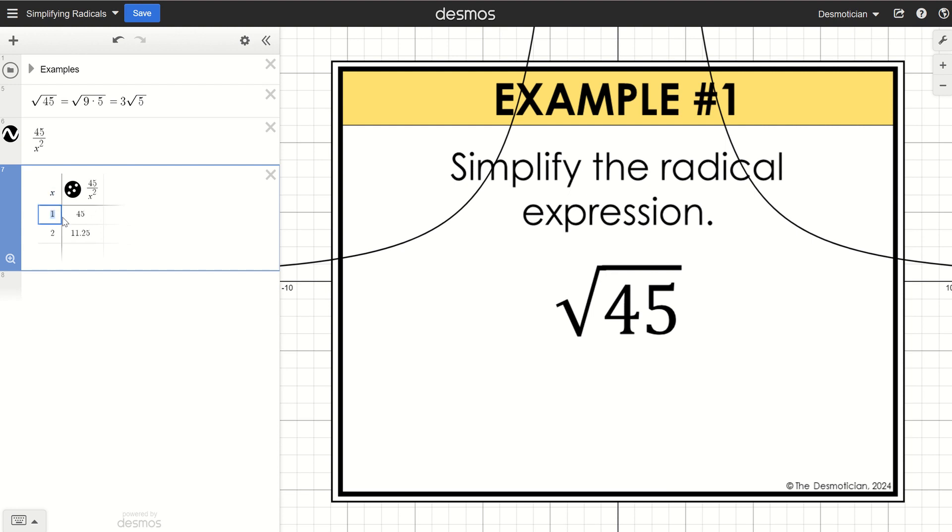1 times the square root of 45 is the square root of 45. That's an equivalent expression. 2 and 11 and 25 hundredths is not an integer so that's not going to work.